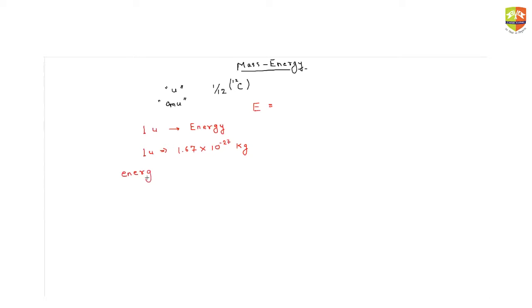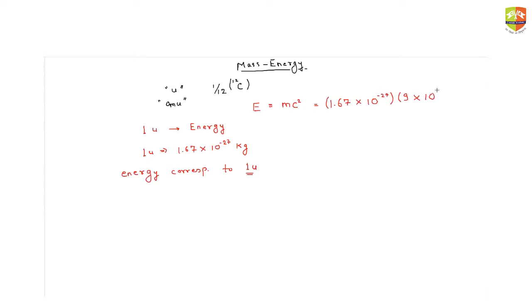We are trying to find the energy corresponding to one unit of mass. If one unit of mass gets converted into energy, how much energy will there be? We use E = mc²: that is 1.67 × 10⁻²⁷ kg multiplied by c² which is 9 × 10¹⁶.